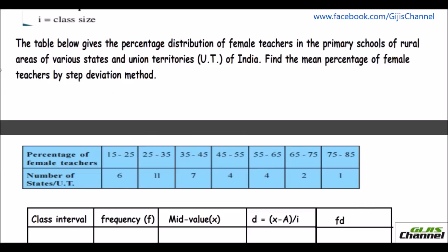Now let us look at a problem. The problem states: the table below gives the percentage distribution of female teachers in the primary schools of rural areas of various states and union territories of India. Find the mean percentage of female teachers by step deviation method.